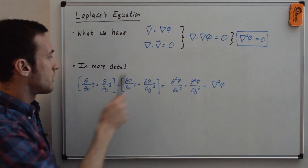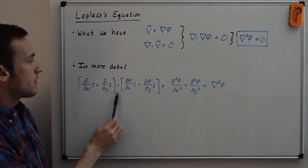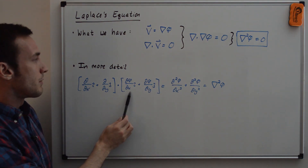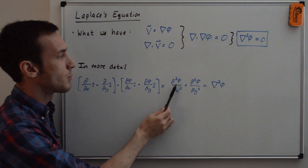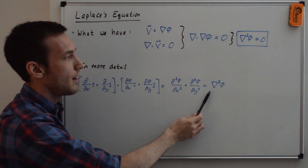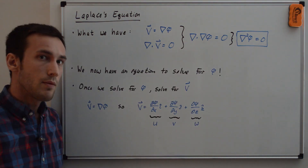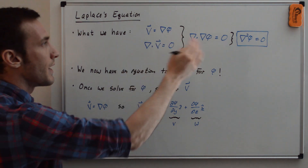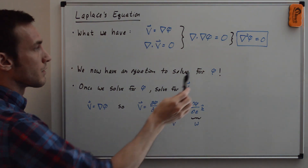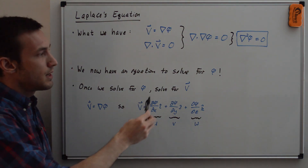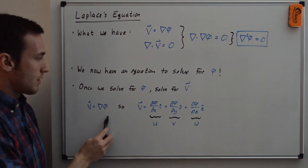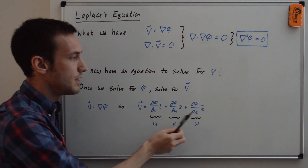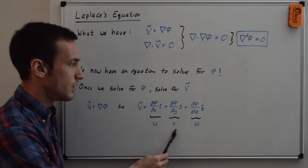In more detail, dotting the del operator with the gradient of phi gives d² phi/dx² plus d² phi/dy², which equals del squared phi. Now we have an equation we can solve for phi — something we didn't have before. Once we solve Laplace's equation for the velocity potential phi, we can then solve for v: u equals d phi/dx, v equals d phi/dy, and w equals d phi/dz. This also works in three dimensions.